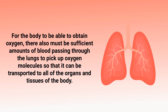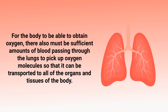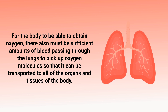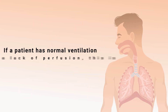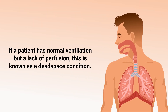For the body to be able to obtain oxygen, there also must be sufficient amounts of blood passing through the lungs to pick up oxygen molecules so that it can be transported to all of the organs and tissues of the body. When a ventilation to perfusion imbalance is present, it means that the amount of ventilation in the alveoli does not match the amount of perfusion.